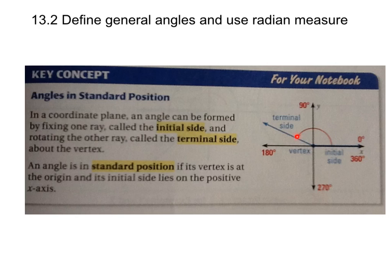Swinging counterclockwise gives us an angle — that angle's other ray is the terminal side. The vertex has to be at (0, 0). Every axis that you go is 90 degrees: 90, 180, 270, 360. That's the basics of angles in standard position. The initial side can go other places, but if it's in standard position, the initial side will always be on the positive x-axis.